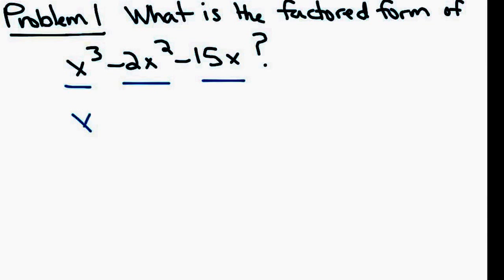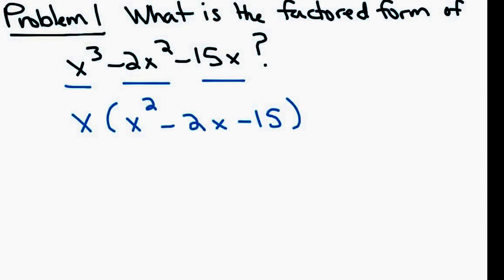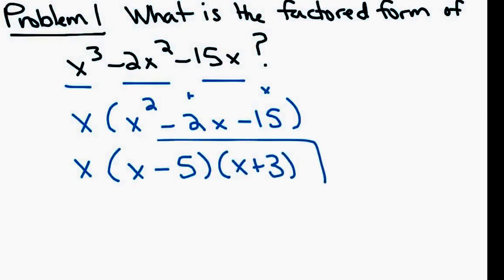I want to find out what the factored form of x cubed minus 2x squared minus 15x is. Notice all three of these terms have an x — they have a greatest common factor — so I'm going to take the greatest common factor out. When I do, I'm left with x times the quantity x squared minus 2x minus 15. The trinomial left in parentheses is easily factored. What two numbers multiply to give you negative 15 but add to give you negative 2? They're negative 5 and positive 3. And then this is factored form.